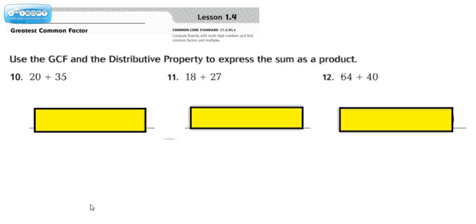Most people tend to do okay with finding the Greatest Common Factor and using factor trees and various methods to finding it, but they're confused about how to follow the directions that you see here, which are: use the GCF, which stands for Greatest Common Factor, and the Distributive Property to express the sum as a product.